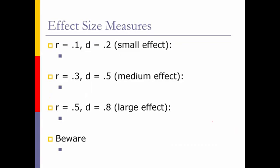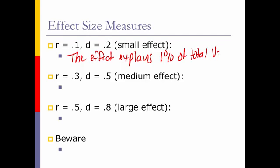So, if you have an R of 0.1 or Cohen's D of 0.2, we look at this, and we can say the effect explains a whopping 1% of the total variance. How did I get 1%? 0.1 squared is equal to 0.01. So, all we need to do is square the value of R and find out what variance is associated with that effect. So, that's nothing.